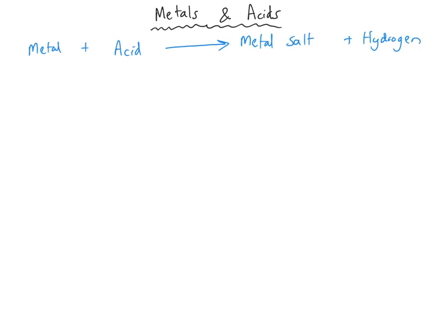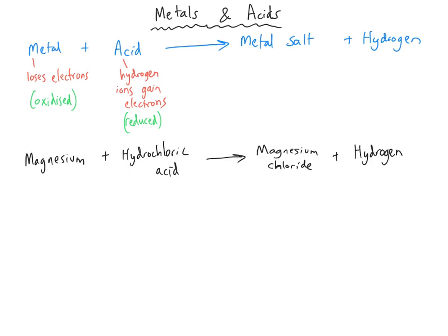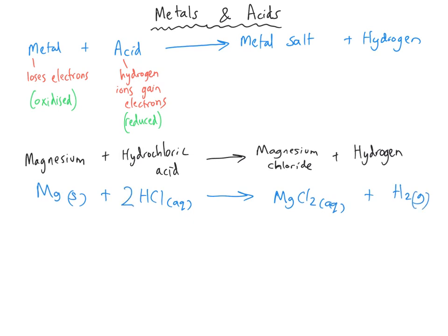We can go through a similar process with the reactions between metals and acids. When acids react with metals, they form metal salts and release hydrogen gas, which you can test for with the squeaky pop test with a lit splint. These reactions are also redox reactions, because the metal loses electrons and the hydrogen ions gain them — the hydrogen is reduced and the metal gets oxidized. Looking at the symbol equation: solid magnesium reacts with hydrochloric acid (Aq) to produce magnesium chloride solution and hydrogen gas, balanced with the multiplier 2.